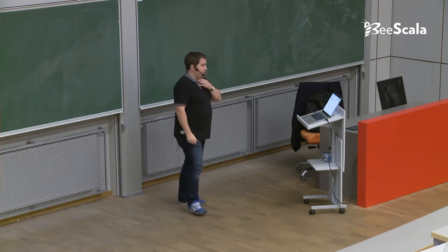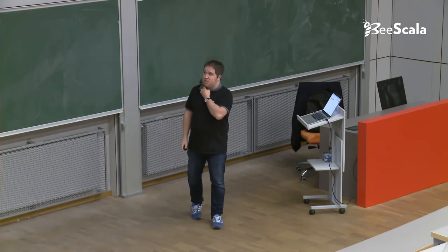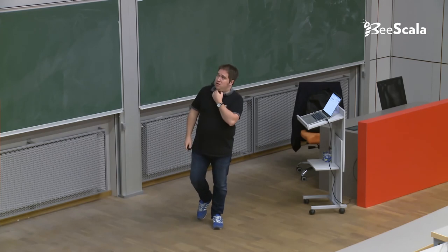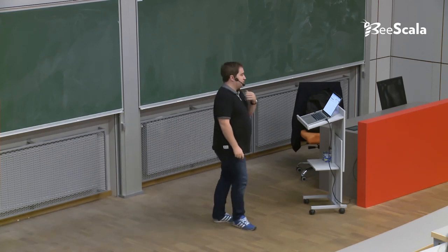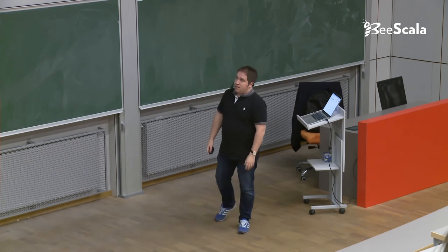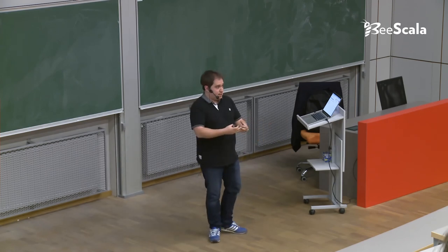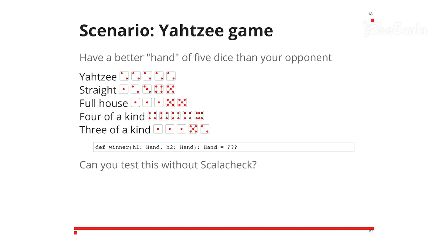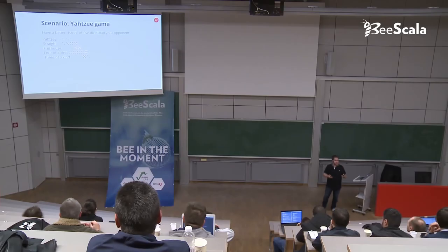I want to talk about this game. I've given this talk a few times and not many people seem to have heard of it, although it's popular with children in the UK. We have five dice and we're going to roll them and produce different hands or scores. It's quite similar to poker — Yahtzee is five of a kind, all five dice the same, and that's the best. A straight is one, two, three, four, five or two, three, four, five, six. A full house is three of one and two of another.